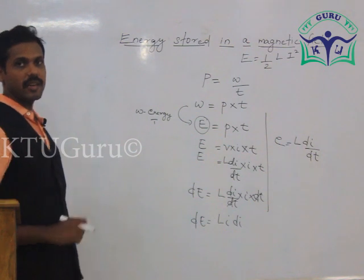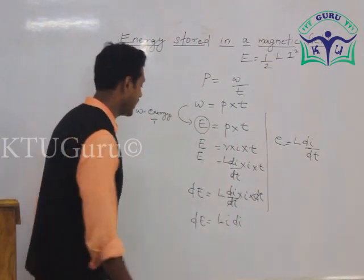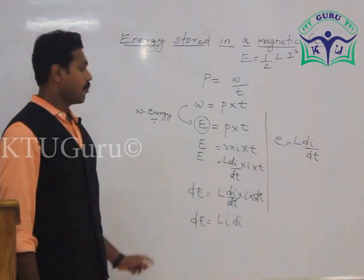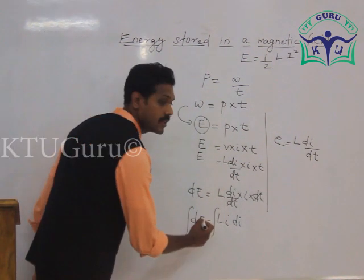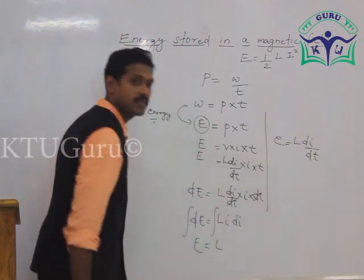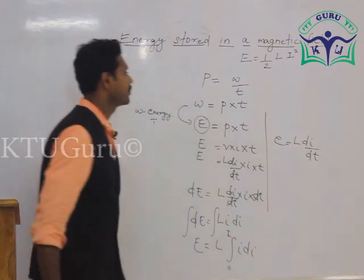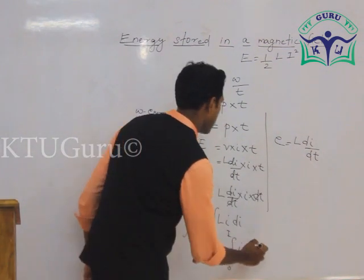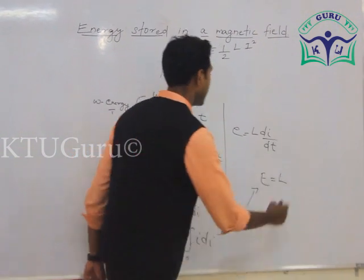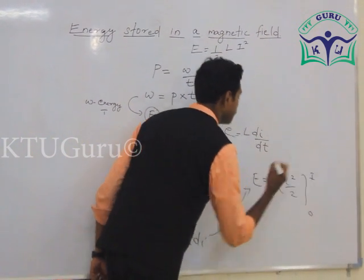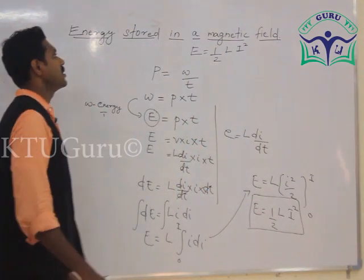By integrating both sides, integral dE equals integral L I dI. Since L is a constant, the integration limits go from 0 to capital I, giving E equals L into the integral from 0 to I of I dI. This evaluates to E equals L into I square by 2 from 0 to I, so the final expression is E equals half L I square — the energy stored in a magnetic field.